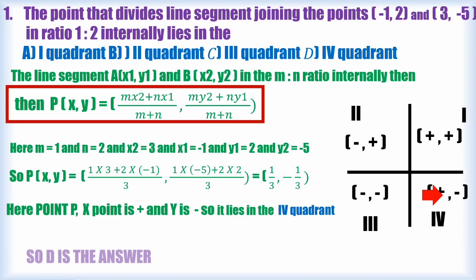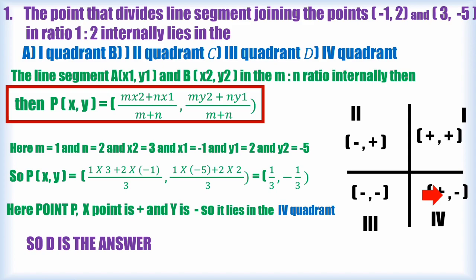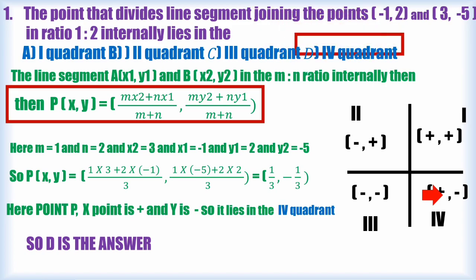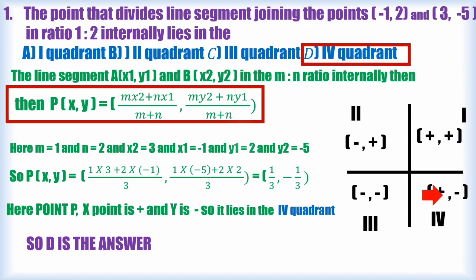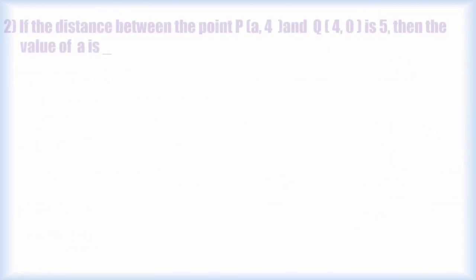It's a very easy but tricky question. First quadrant is (+, +), second is (-, +), third is (-, -), and fourth is (+, -). So the fourth quadrant is the answer — option D.